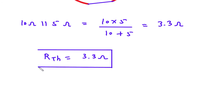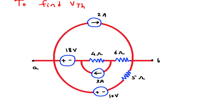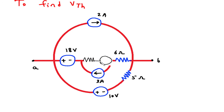Next we have to find VTH. To find VTH, we will use source transformation. First we will convert this 3A current source into its equivalent voltage source. This gives a 4 Ohm in series with a voltage source, with positive and negative polarity. V equals I times R, where I is 3A and R is 4 Ohm, so V equals 4 times 3 equals 12V.